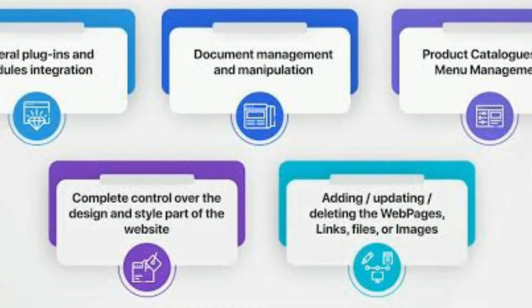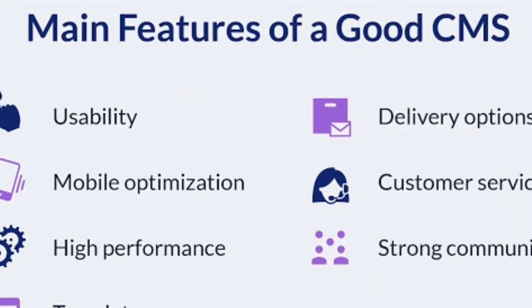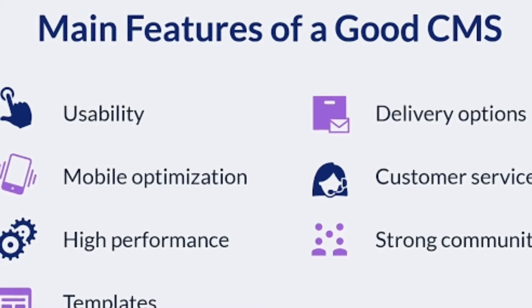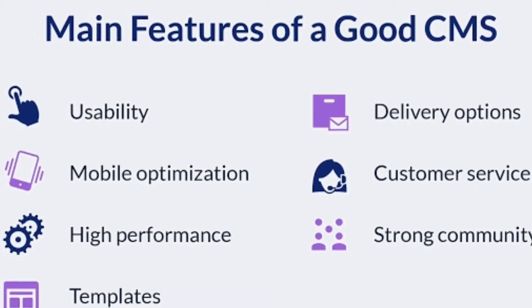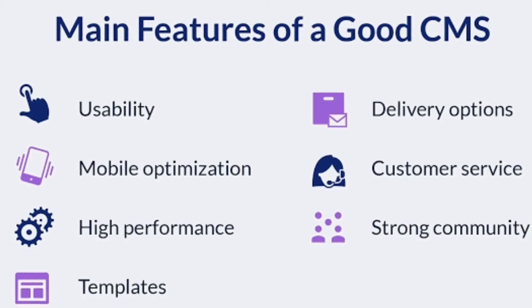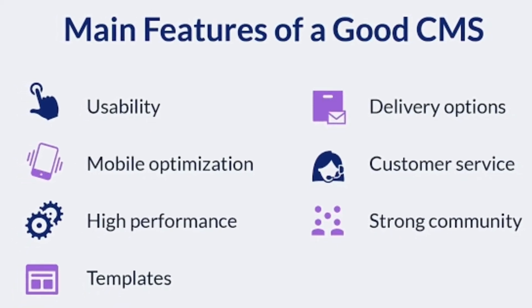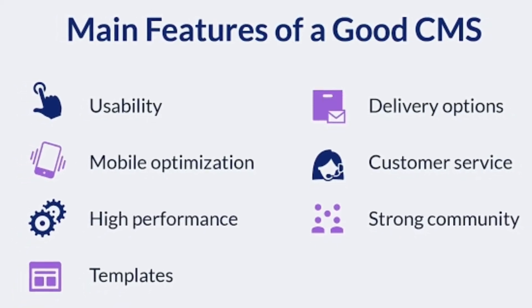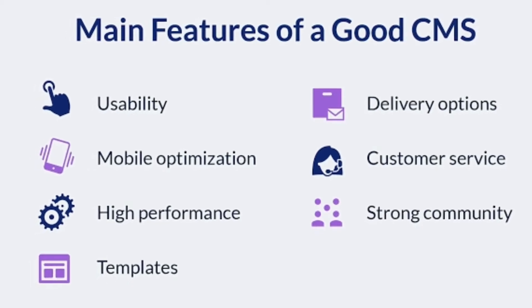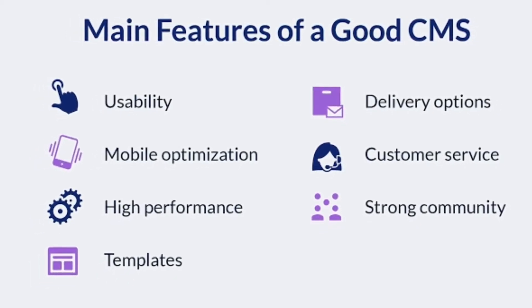Some features and capabilities of a CMS platform include SEO, which is also known as search engine optimization, compatibility and support, content scheduling, pages, and many different templates. CMS platforms like WordPress and WIX provide a wide variety of tools to tag content and create a taxonomy.